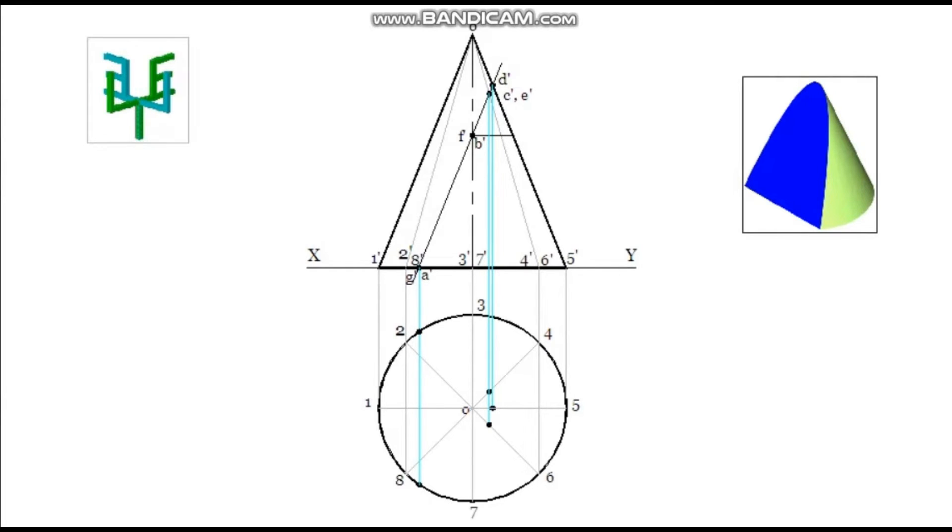These points are initially taken to the generator horizontally. Then it is projected to the corresponding line of the plan. Then from the center of the circle in the plan, this distance is taken back to the actual lines. Name the corresponding intersection points of the plan.